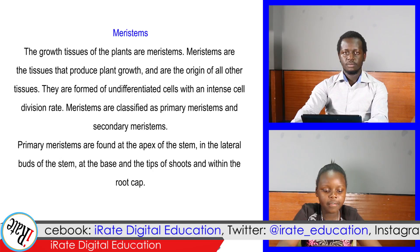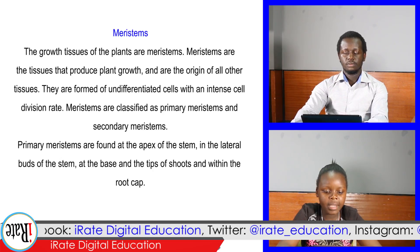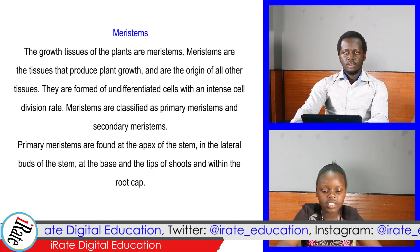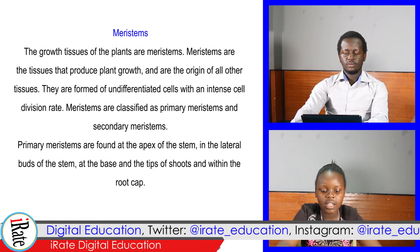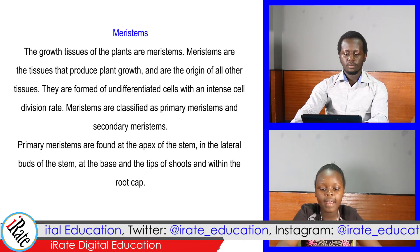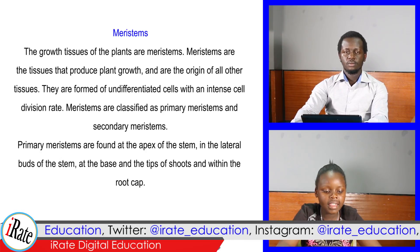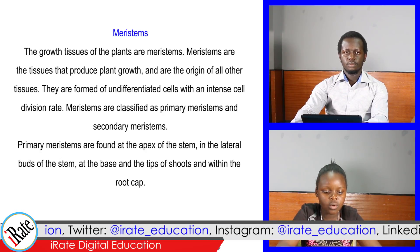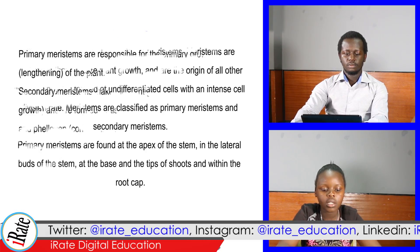Primary meristems are found at the apex of the stem, in the lateral buds of the stem, at the base and the tips of shoots, and within the root cap.